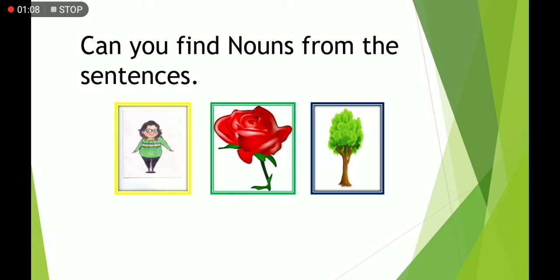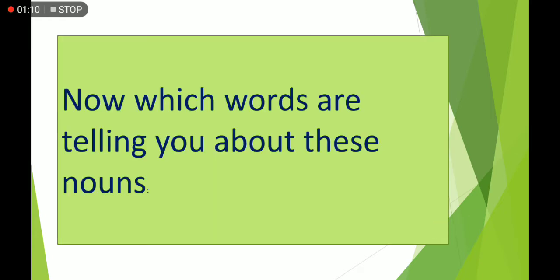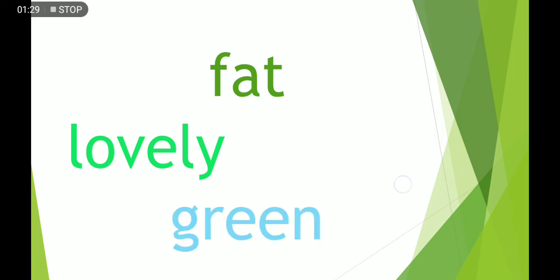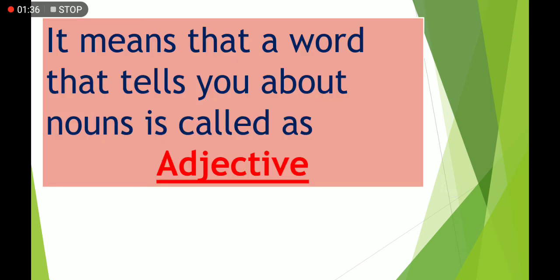You are familiar with them. Now, which words are telling you about these nouns in the sentences, or the qualities of those nouns? Fat, lovely, and green. Remember, these words were highlighted in the previous sentences. So it means that a word that tells you about nouns is called an adjective.